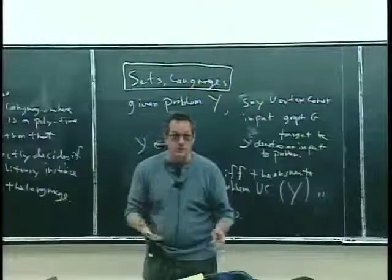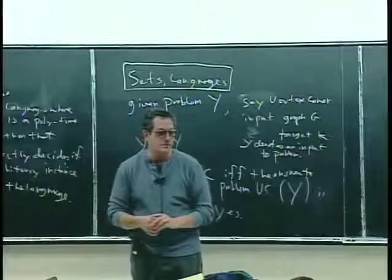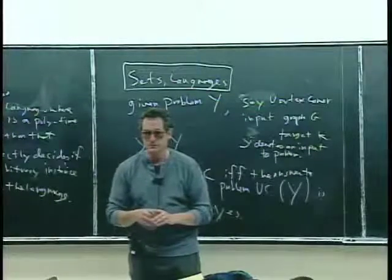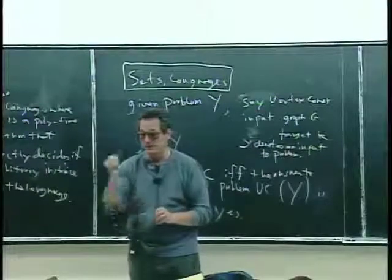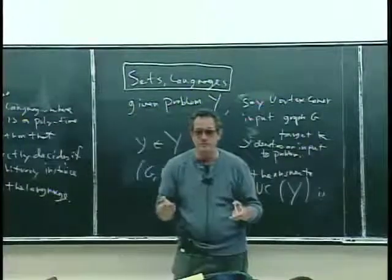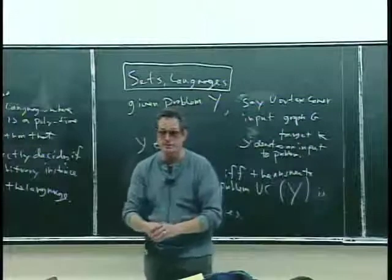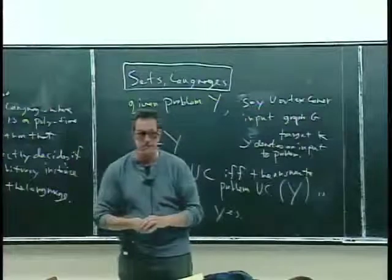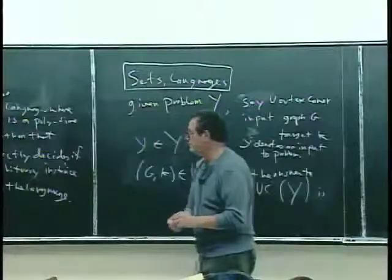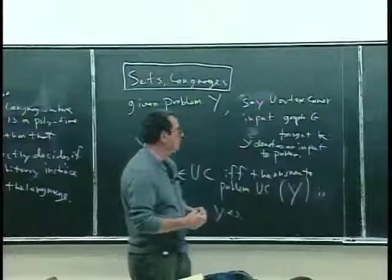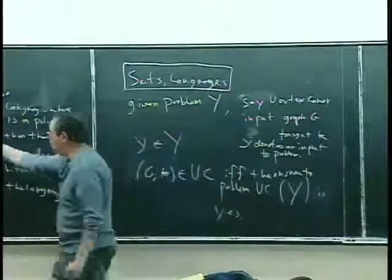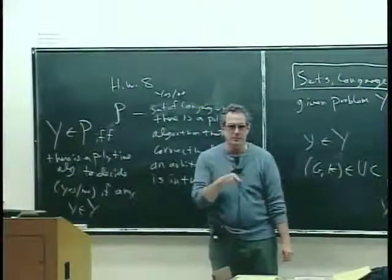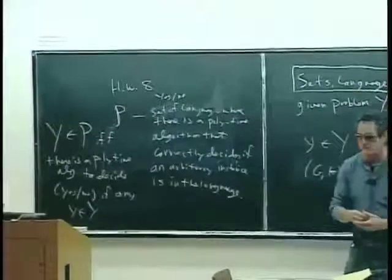What's an example of a problem we didn't claim was in P? Any problem we've seen where the only algorithms we have are exponential time? Vertex cover — the only algorithms we have just enumerate subsets of that size and ask whether there's a vertex cover, and that's exponential time. So we have problems known to be in P and problems not known to be in P. Not knowing it's in P is different than knowing it's not in P.